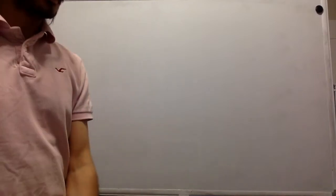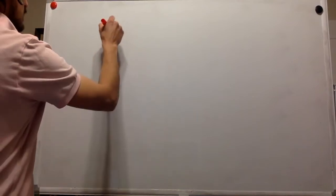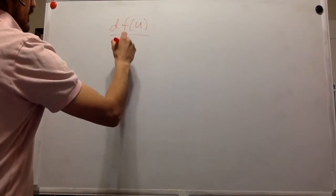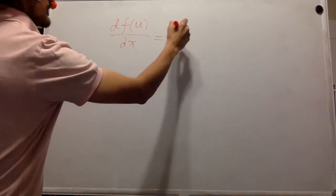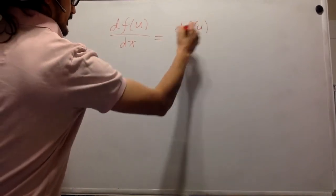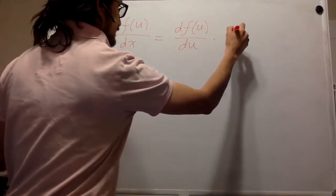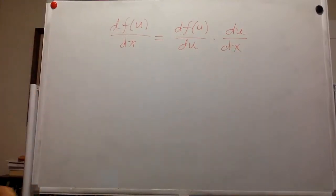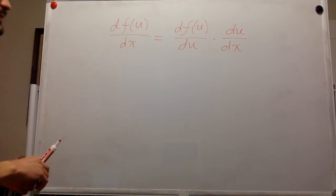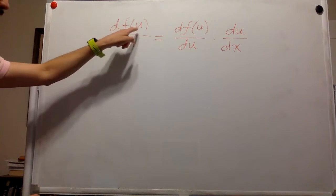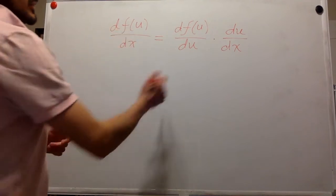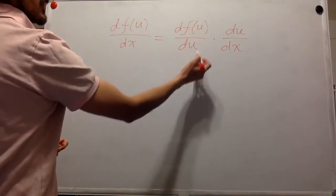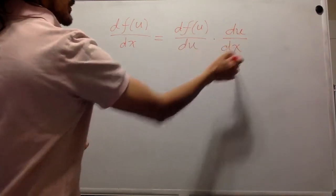So the chain rule is one of the most famous equations in mathematics. If you have taken any calculus classes, you almost certainly have seen it. The derivative of a function of u with respect to x is equal to the derivative of that function with respect to u times the derivative of u with respect to x.